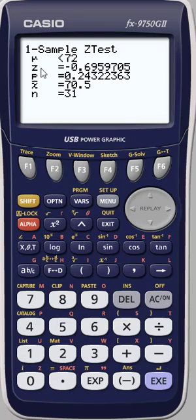We find that our Z test statistic, which is the sample mean converted to a Z, is minus 0.696.